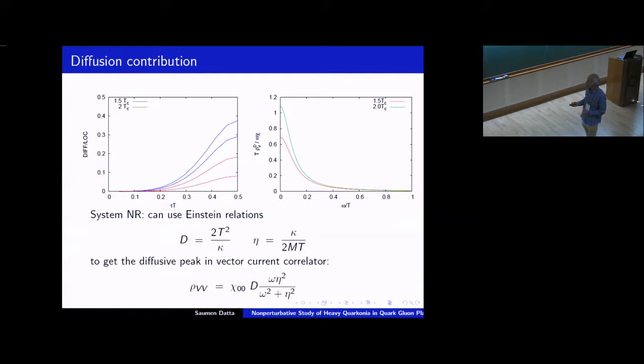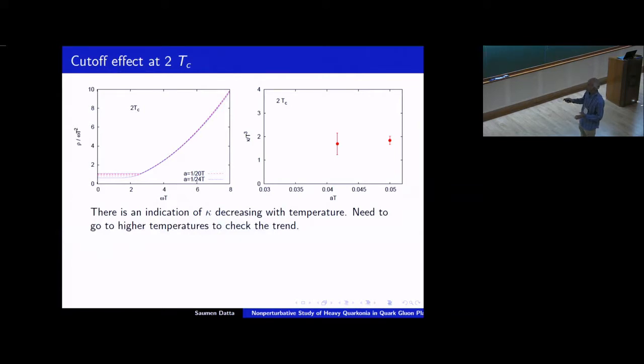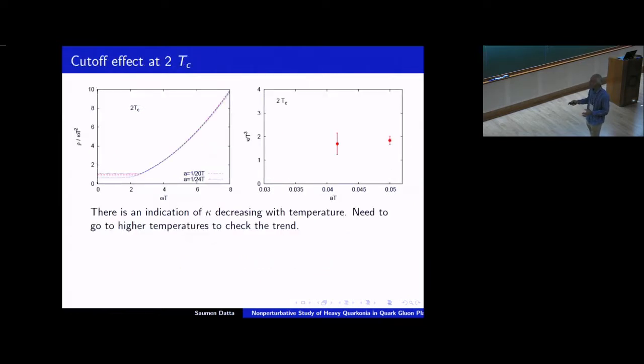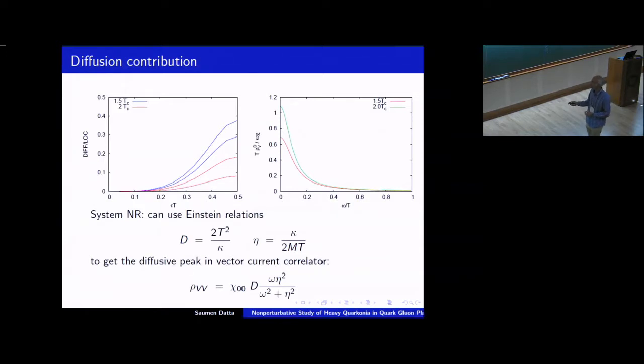So how much is the contribution of the diffusive part to the spectral function? So if I just look at the electric field, electric field correlator, and just take the values that we got from the diffusive part, and compare that to the contribution from the high omega part in the final correlator. What one sees is that the contribution of the diffusive part is quite substantial actually near the center of the lattice. It's almost 30 percent for lattices at 1.5 Tc. So this is the ratio of the correlator reconstructed from just the diffusive part that we got in this previous picture, and the part that we got from the perturbative part. And so this, of course, comes down because as I said, the kappa by T cubed seems to be coming down. But even at 2 Tc, it's more than 10 percent or at least about 10 percent near the center of the lattice.